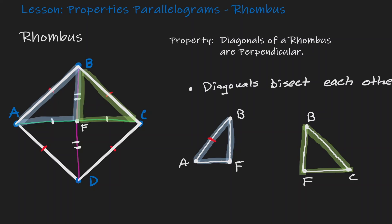Well, let's look at what we know about the rhombus. We know that AB is congruent to BC because those are the sides of the rhombus. In addition, we know that AF is congruent to FC. By symmetry, BF is congruent to itself. So if we take a look at these two triangles, we can see that they are congruent to each other.